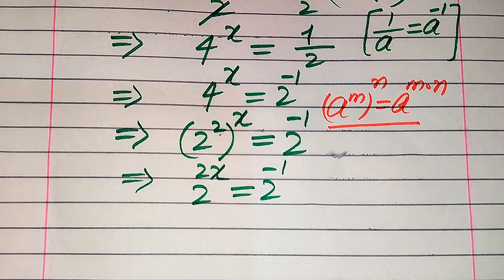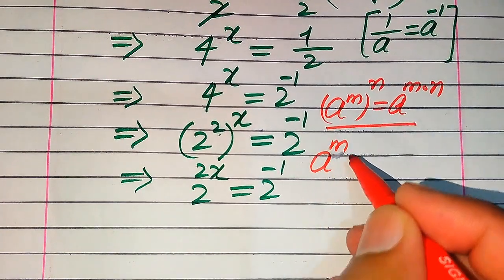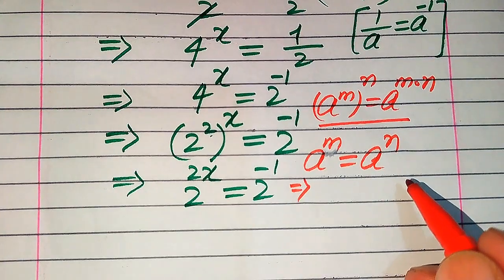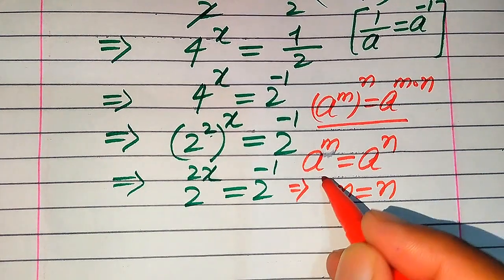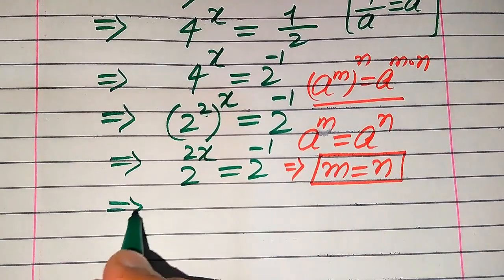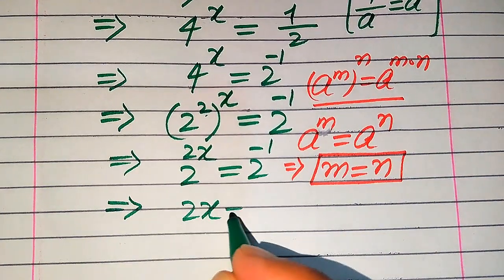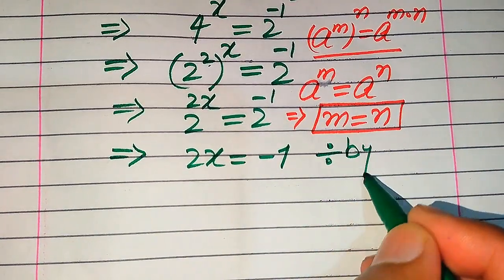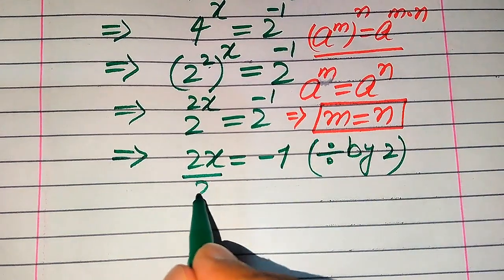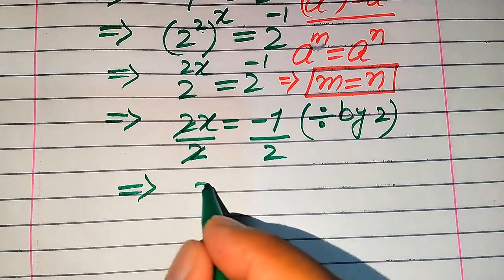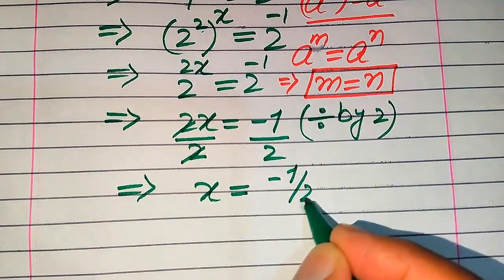Here we use another exponent rule: if we have a to the power of m equals a to the power of n, and the bases of both terms are the same, we equate the exponents and get m equals n. Focusing on our equation, you see the bases on both terms are also the same, so we get 2x equals minus 1. To find the value of x we divide both sides by 2, so 2x divided by 2 equals minus 1 divided by 2. This 2 cancels out and we get x equals minus 1 over 2.